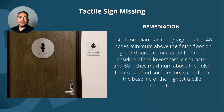A compliant tactile sign is located 48 inches minimum above the finished floor or ground surface, measured from the baseline of the lowest tactile character, to 60 inches maximum above the finished floor. That pictogram does not have to be tactile — just the letters.